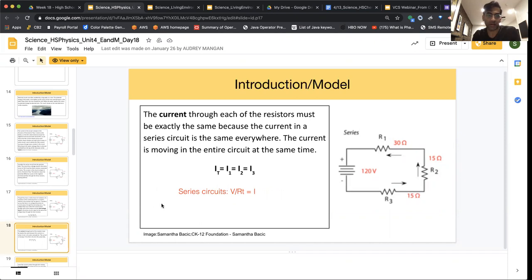The first step that we're going to take to figure out our current is going to be to get RT, and that's going to equal the sum of all our individual resistors in that series circuit. And the second step will be to do V divided by that RT, and that will give us our current.